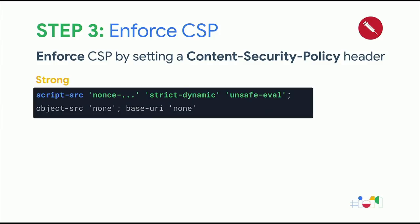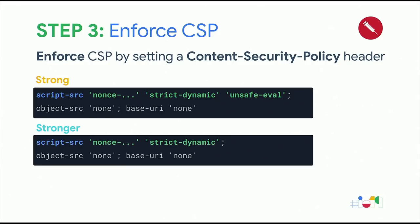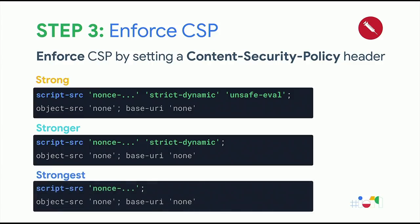Step three: enforce the content security policy. That is essential — without the response header, the browser will not enforce it. We usually recommend using the policy that we use in most Google applications. If you can, I would recommend removing 'unsafe-eval', but then you also have to make sure your application does not use JavaScript eval. If you don't have third-party JavaScript dependencies, you can also try a nonce-only CSP, which offers the most security properties but is usually quite hard to adopt.